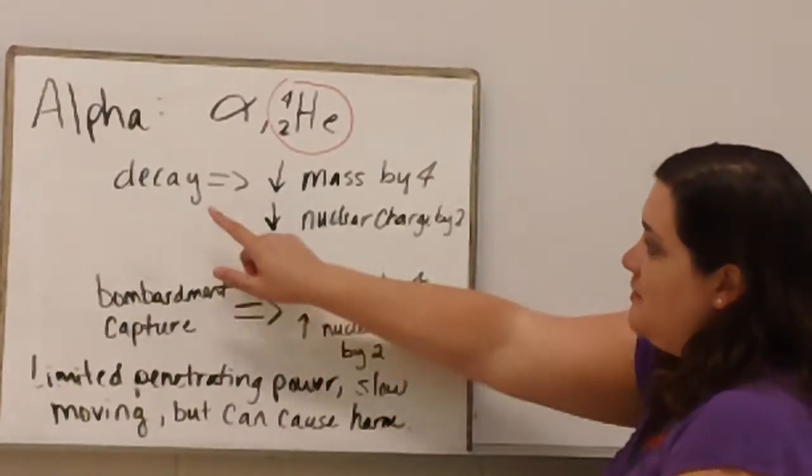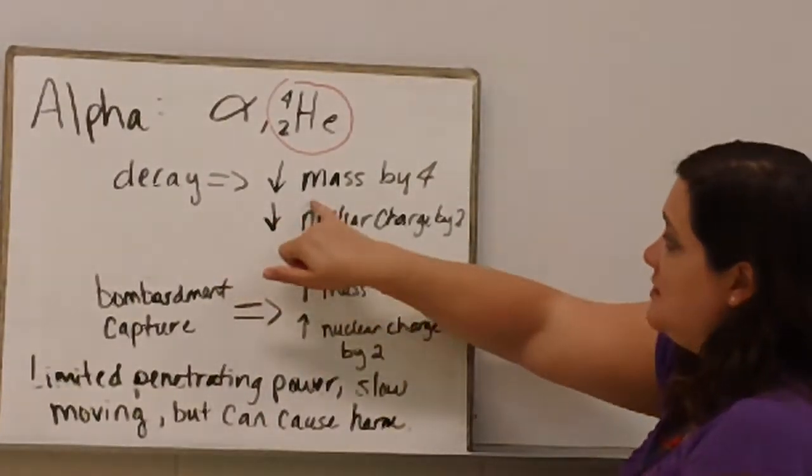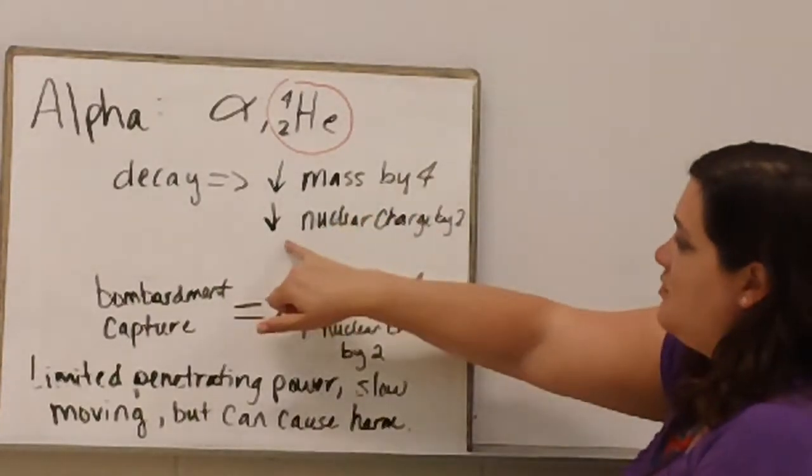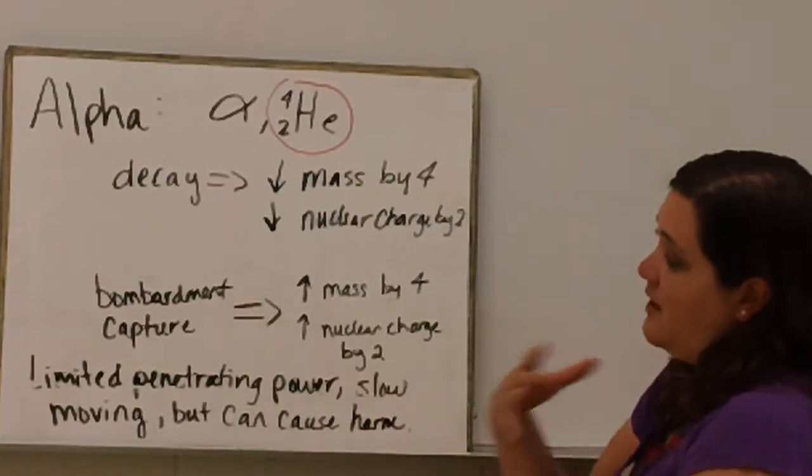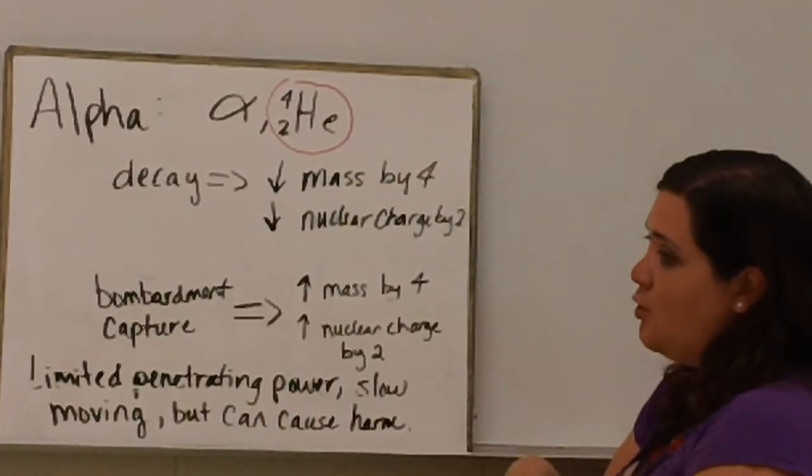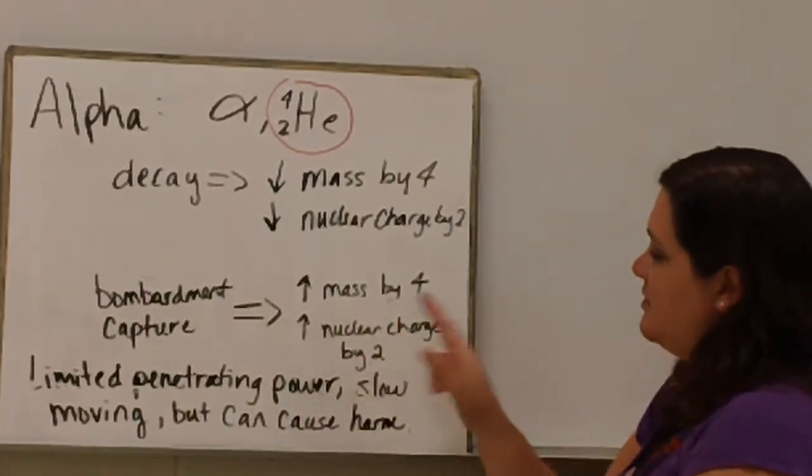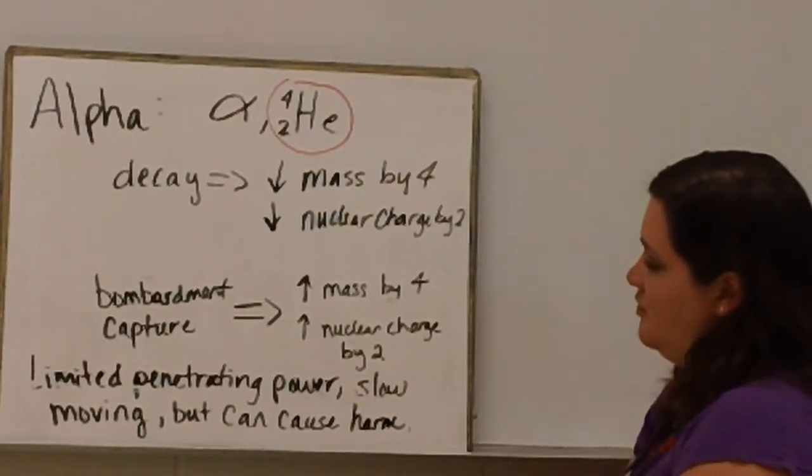When something undergoes alpha decay, it decreases its mass by 4 and decreases its nuclear charge by 2. If we were to bombard or capture an alpha particle with another nucleus, it would increase the mass by 4 and increase the nuclear charge by 2.